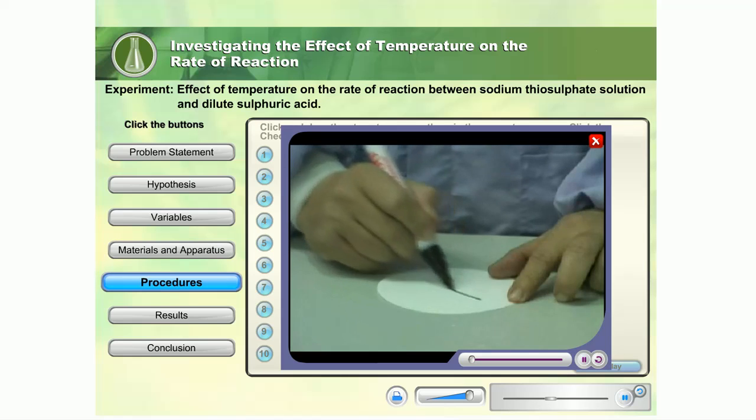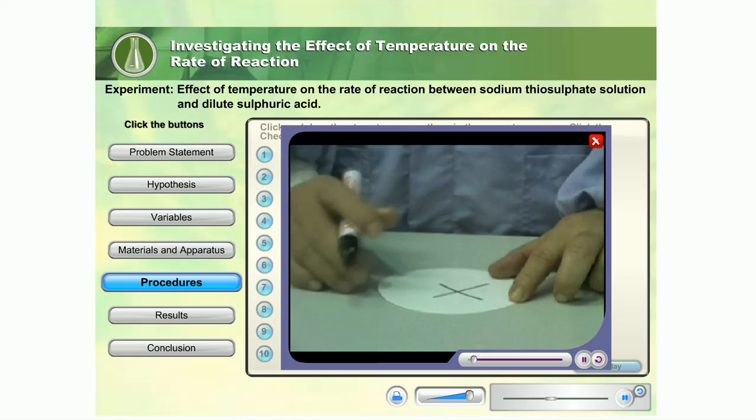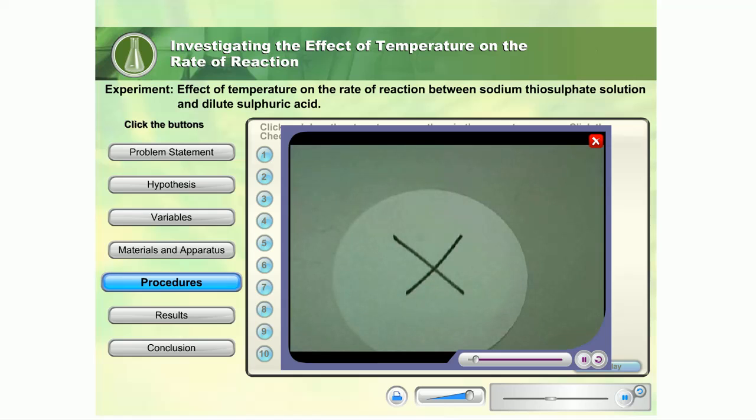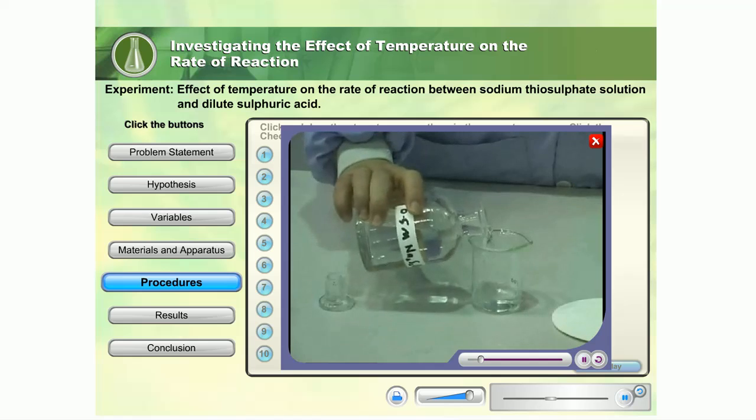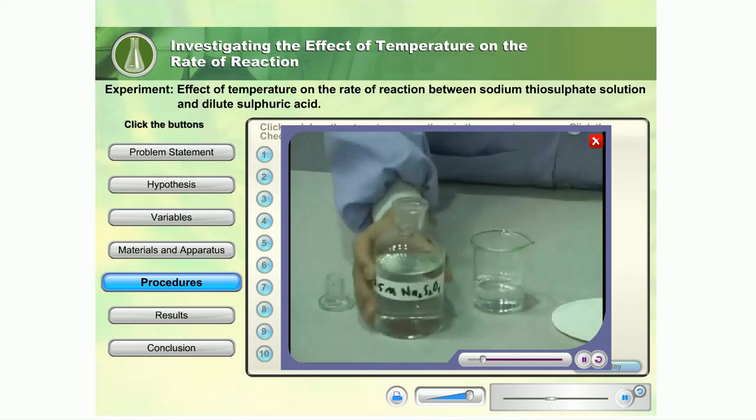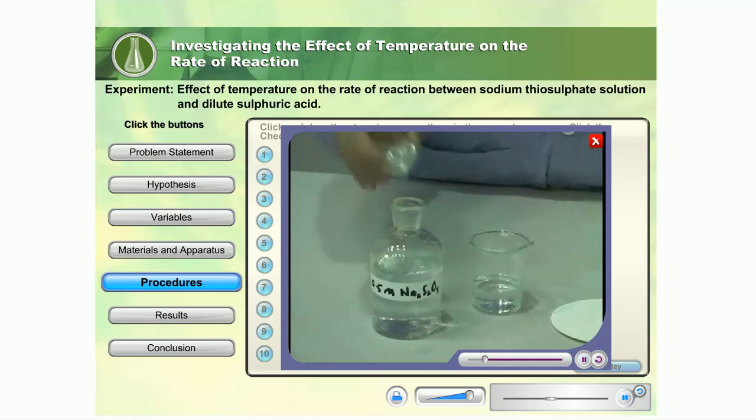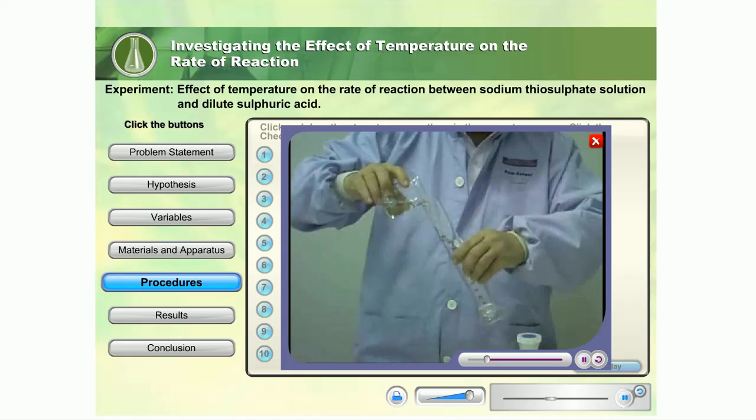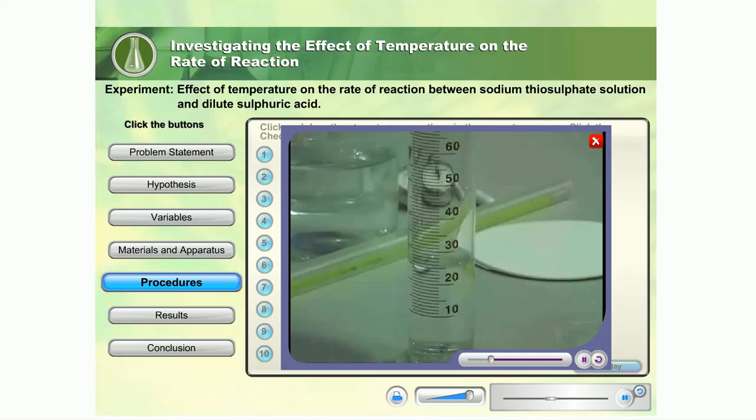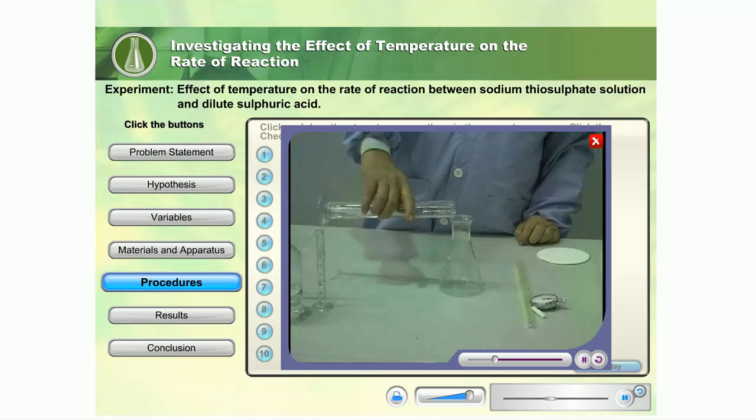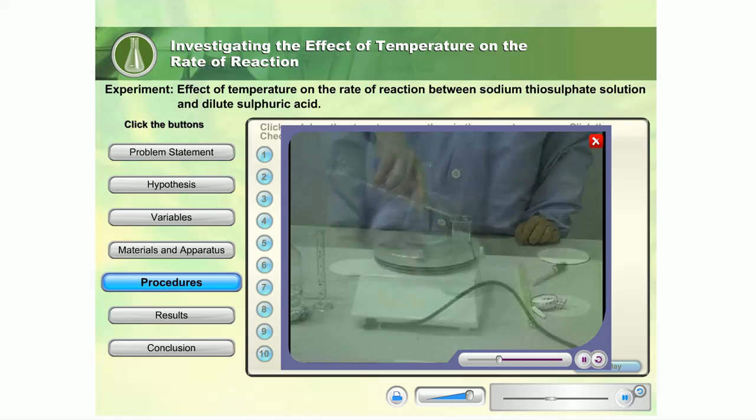Draw an X about 2 x 2 cm in the center of a piece of white paper. Measure out 25 cm³ of 0.5 mol per cubic decimeter sodium thiosulfate solution using a 100 ml measuring cylinder. Pour the sodium thiosulfate solution into a clean, dry conical flask.